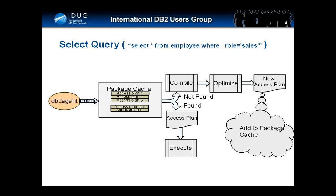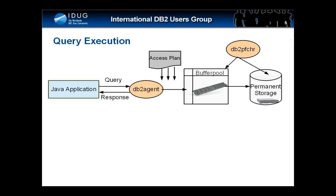For performance reasons, DB2 caches data pages in volatile memory in regions called buffer pools. Having an adequate amount of buffer pools ensures that disk access times do not dominate the time taken to assemble the data that satisfies the query.